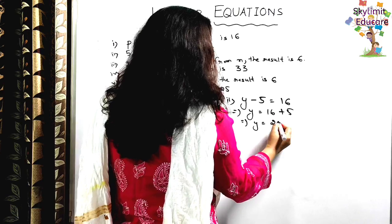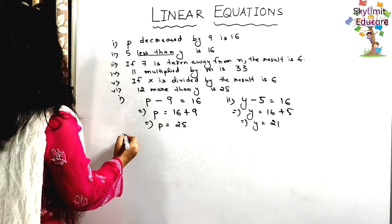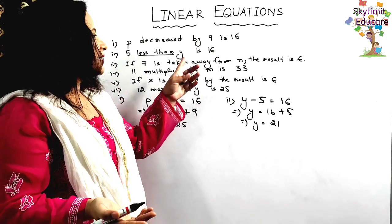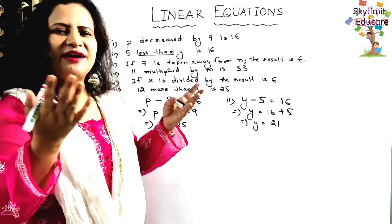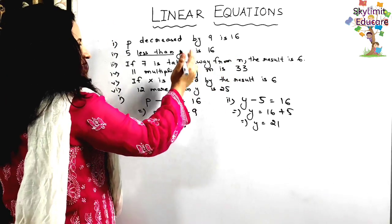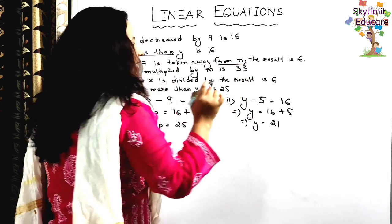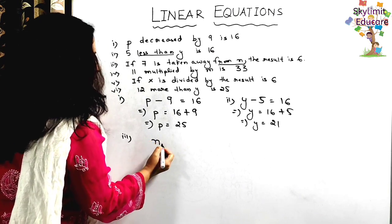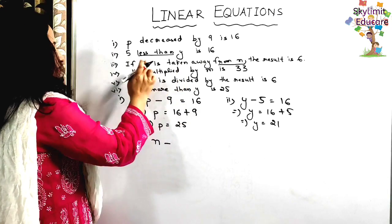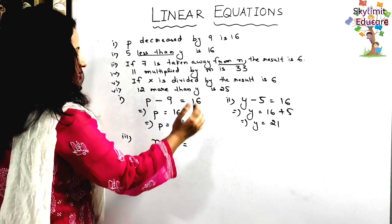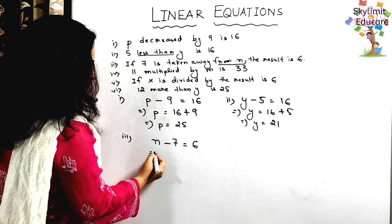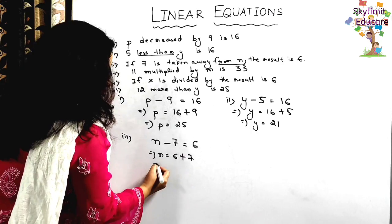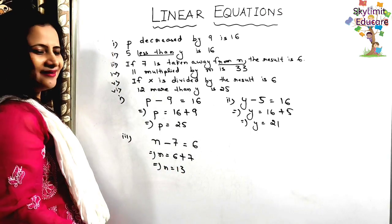Statement 3: '7 is taken away from n, the result is 6.' Taken away means subtracted. After 'from' is the minuend — that's n. So the equation is n minus 7 equals 6. Shift minus 7 to the right — becomes plus 7. So n equals 6 plus 7 equals 13.